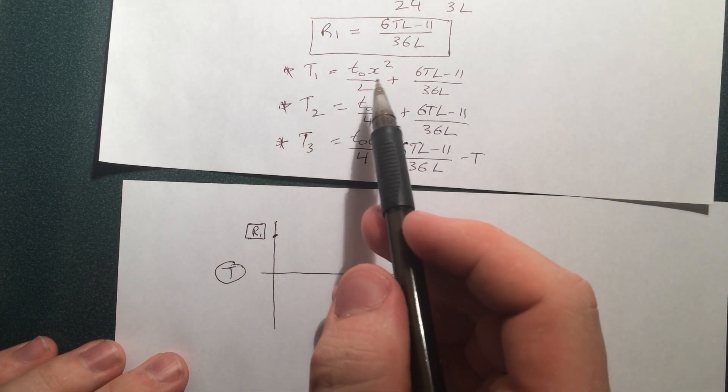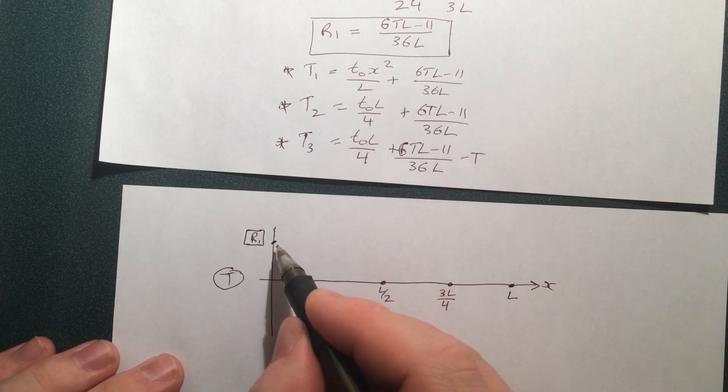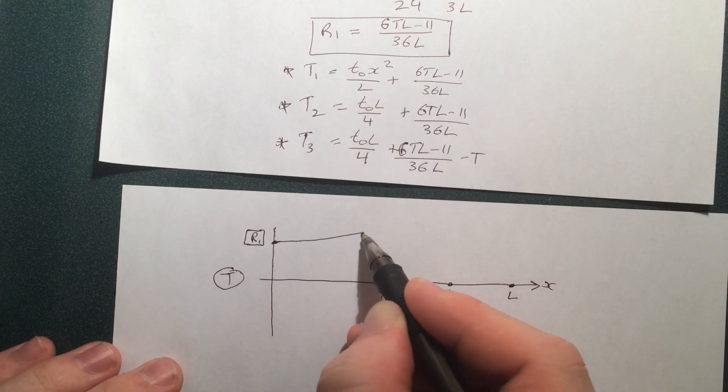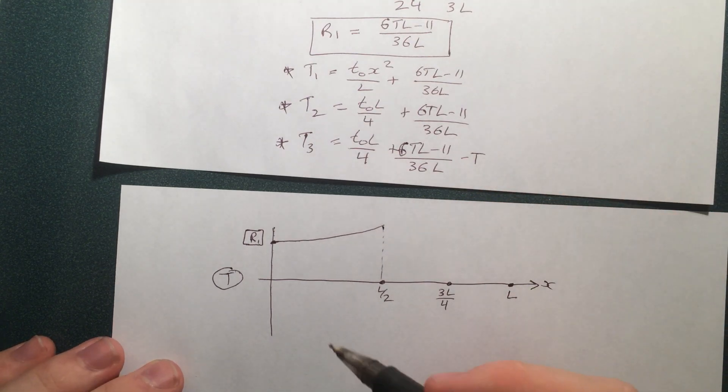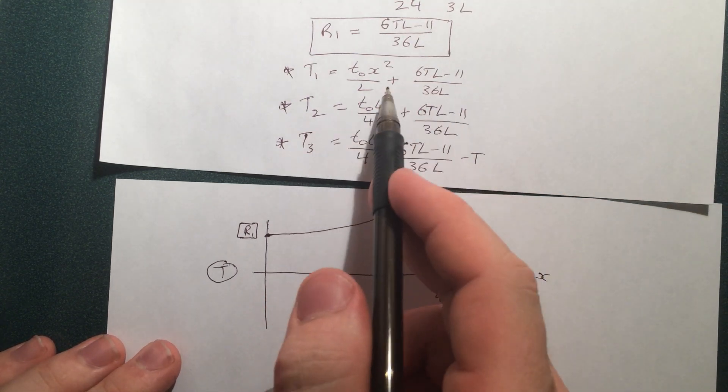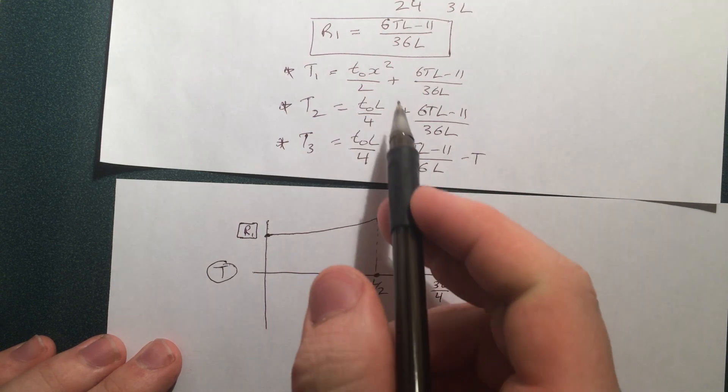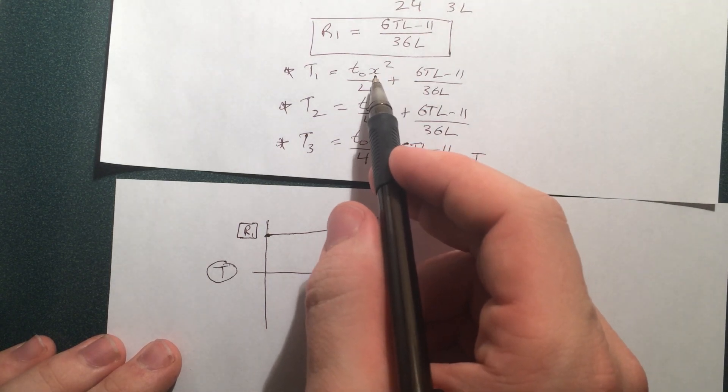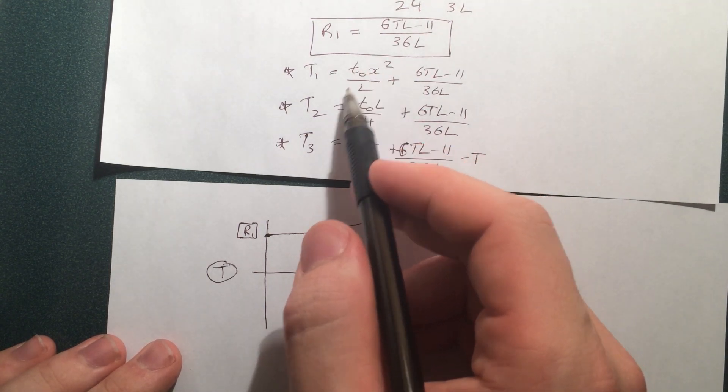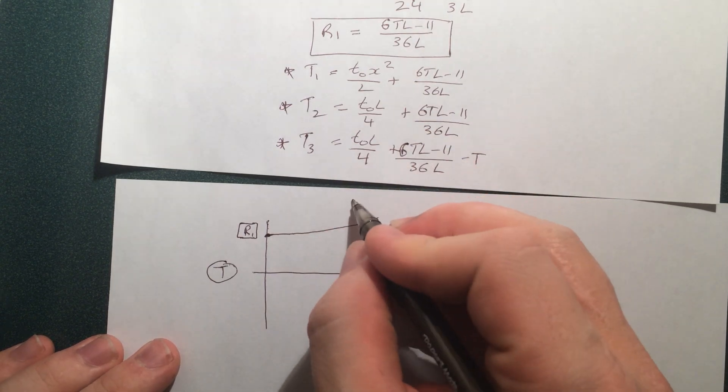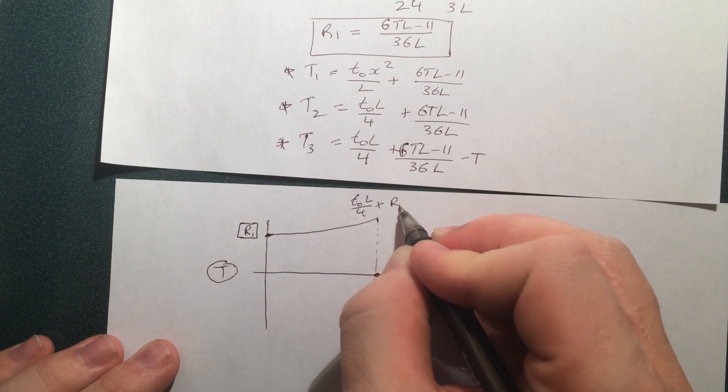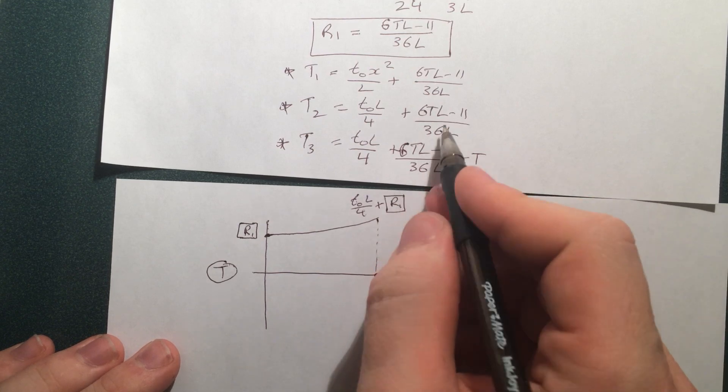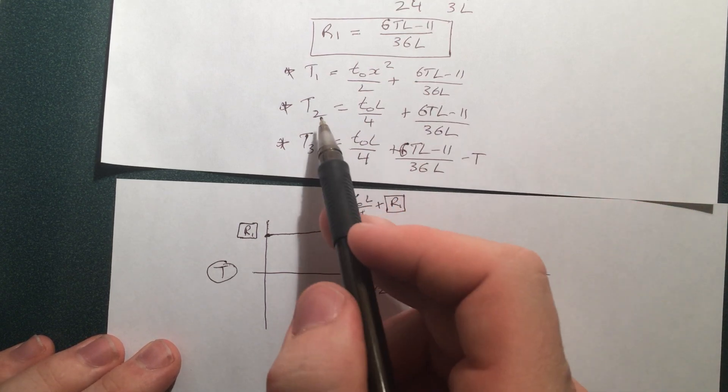And then, from there, it increases x squared positively. Like this. And we get to there. And at that point, it's at L by 2. We put L by 2 in here. We get L squared by 4. So T not L by 4 plus this whole bit here. And this makes sense, because look, T2 is exactly the same. Makes sense, there's no additional torque here.